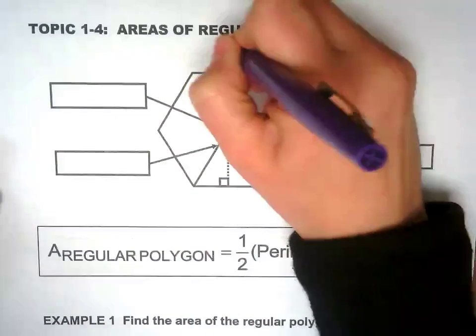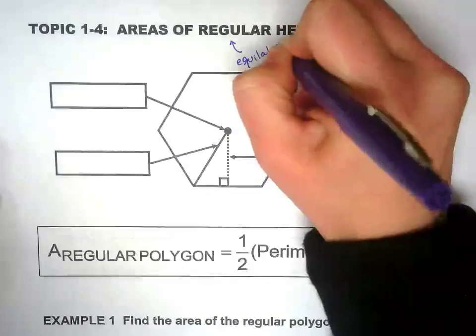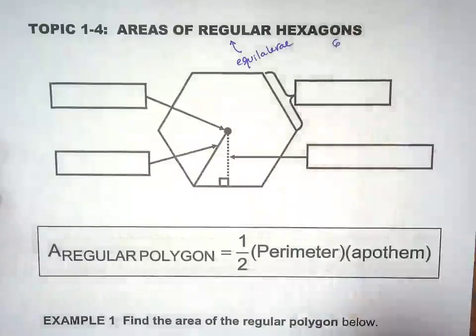So regular means all sides are the same, so equilateral hexagon, six sides.